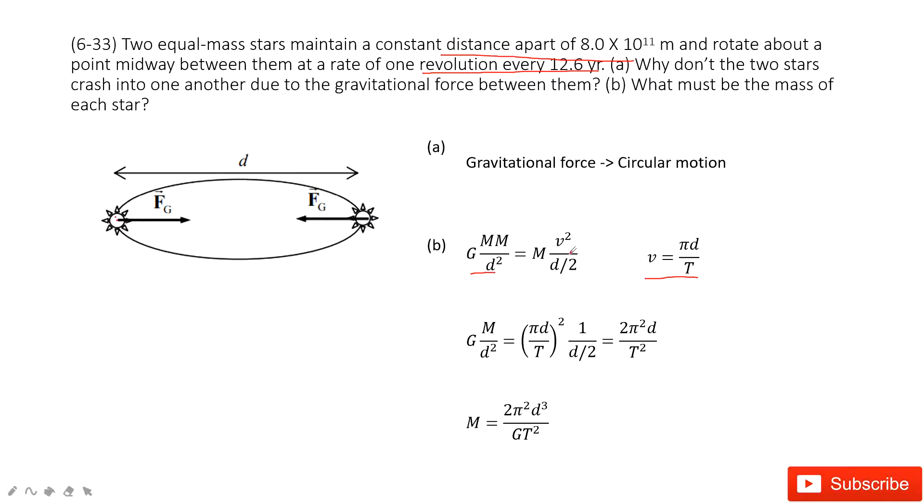It's v squared divided by r. The r is diameter divided by 2. In this one, we can solve the equation.